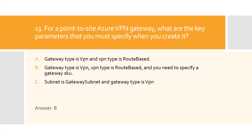Question thirteen: For a point-to-site Azure VPN gateway, what are the key parameters that you must specify when you create it? A) Gateway type is VPN and VPN type is route-based, B) Gateway type is VPN, VPN type is route-based, and you need to specify a gateway SKU, C) Subnet is a gateway subnet and gateway type is VPN. Option B is the right answer. Use the PowerShell cmdlet New-AzVirtualNetworkGateway with parameters gateway type VPN and VPN type route-based. Also set the gateway to the SKU that meets your organization's network requirement.